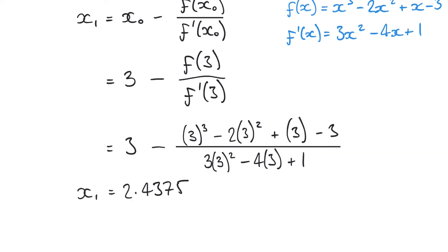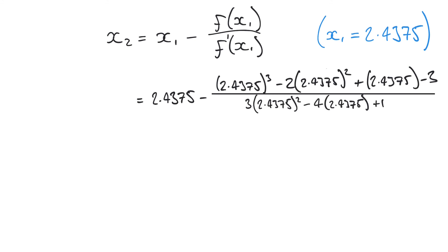We're going to repeat that iteration, now substituting x₁ into our formulation. x₂ equals x₁ minus f(x) over f'(x), but this time substituting 2.4375 in for each instance of x. This time we find our result is 2.2130 for x₂.